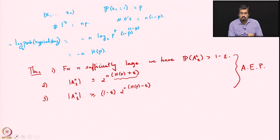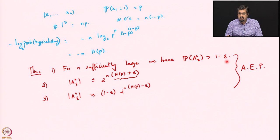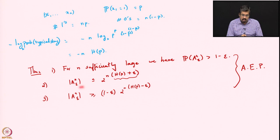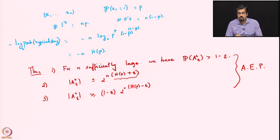What we did was look at the asymptotic equipartition property, examining what is called a typical set — a set of sequences whose probability distribution satisfies a certain set of inequalities. We found that this set satisfies certain properties. The first property is that its probability is large: for n sufficiently large, P(A_n_epsilon) is greater than 1 minus epsilon. But we also have that the cardinality of A_n_epsilon is upper bounded by 2^(n times a constant).